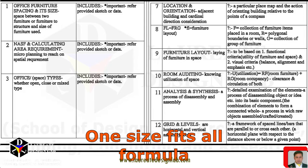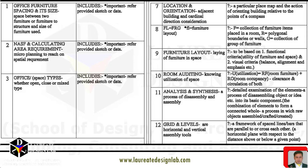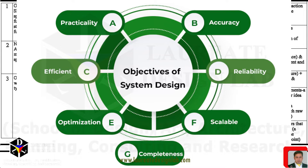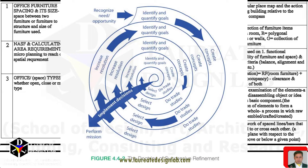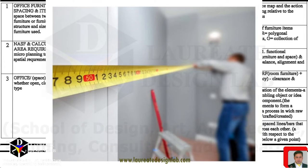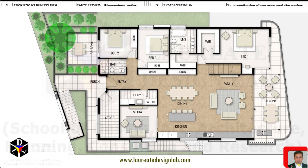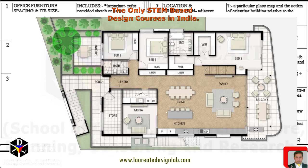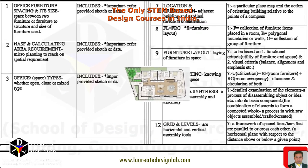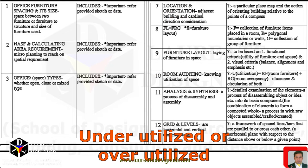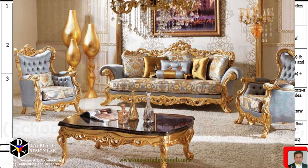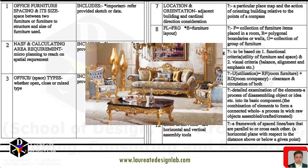There is no one-size-fits-all formula for room auditing as it depends on the specific space and its intended use, but a general approach can be: 1. Define the goals and objectives of the space — identify the intended use, the activities that will take place, and the needs of the people who will use it. 2. Measure the space — take accurate measurements of the room and create a floor plan. 3. Assess the current layout and use of the space — observe how it is currently being used, identify any issues or inefficiencies, and take note of any areas that are underutilized or overutilized. 4. Identify the furniture and equipment needed — determine the types and quantities of furniture and equipment needed to support the intended use of the space.